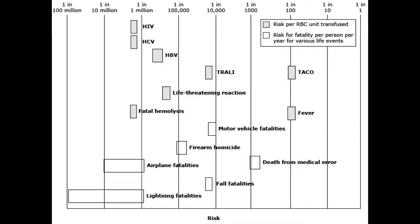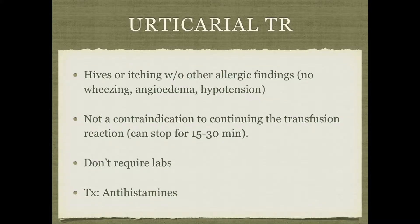These are the risks of these reactions occurring. Usually when we consent patients, they're mostly concerned about getting HIV or hepatitis, but we need to talk to them about all the other possible reactions they can get.